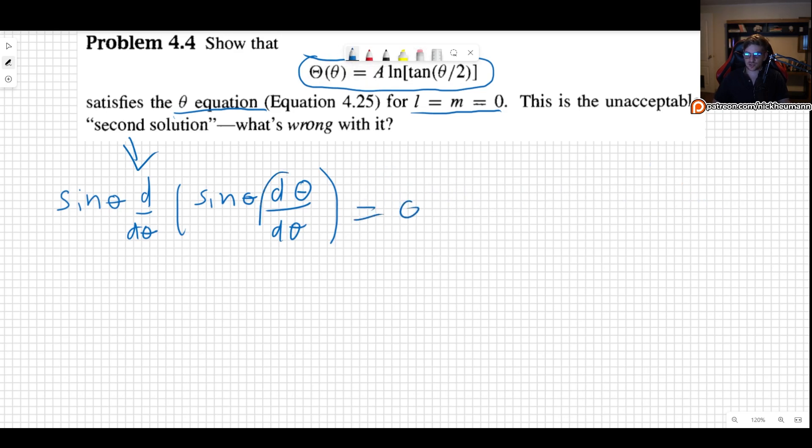So what we need to do is take the derivative of this function with respect to theta. So we want to take the derivative of A, some constant, natural log of the tangent of theta over 2. So that's what we want to do.